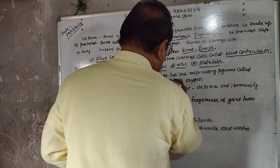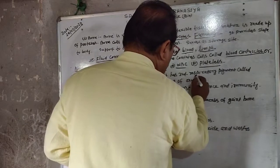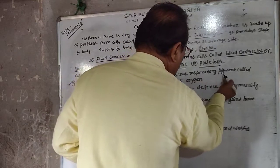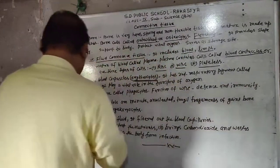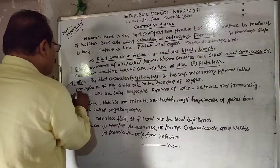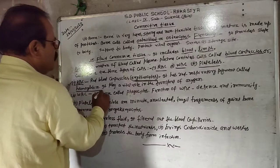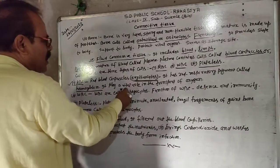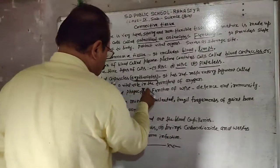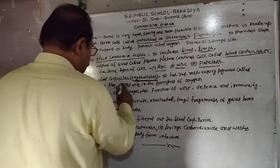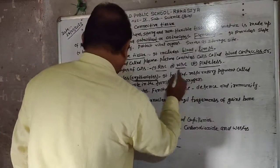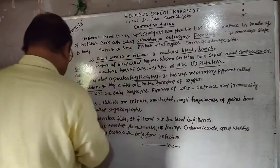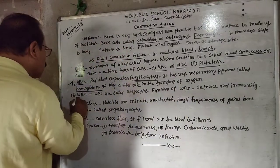RBC has a red respiratory pigment called hemoglobin. It plays a vital role in the transport of oxygen.